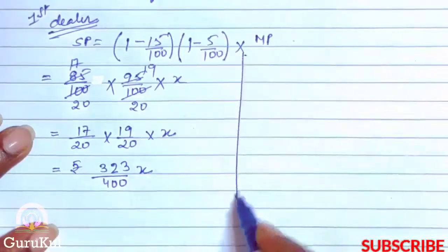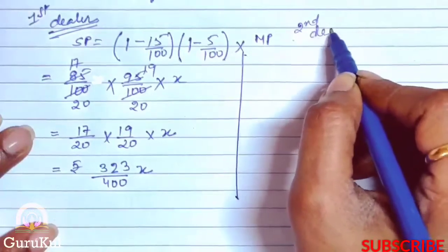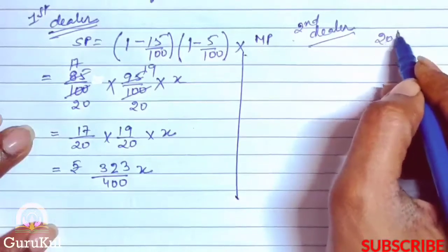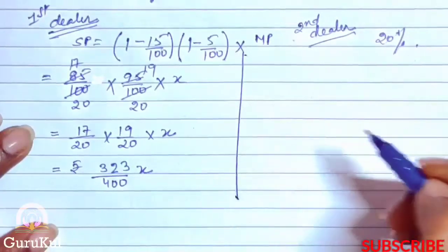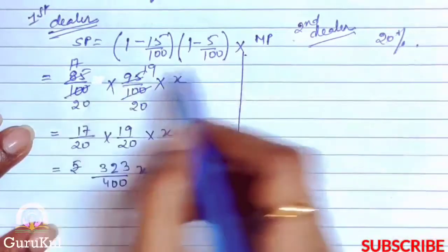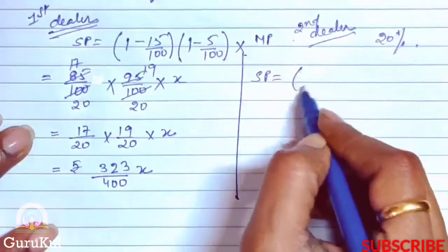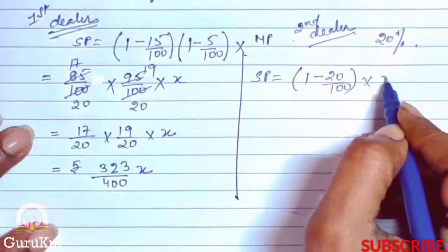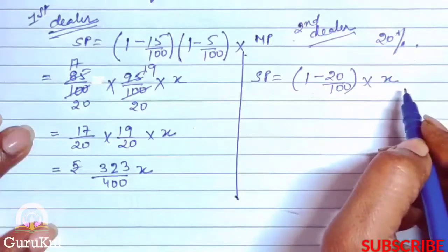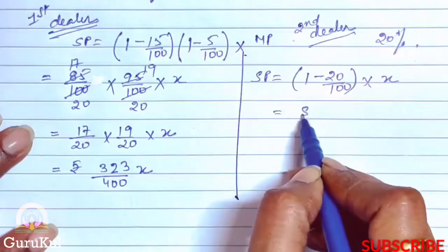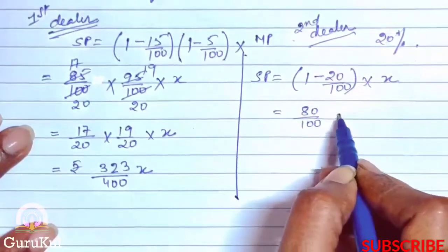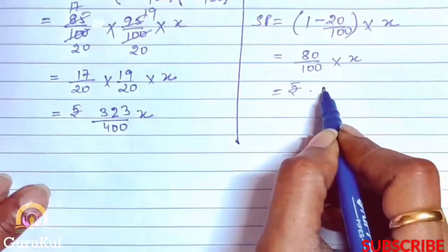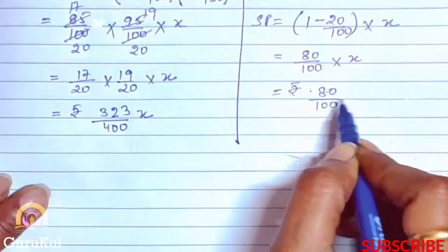Now moving on to the second dealer, who allows a single discount of 20%. Using the same SP formula: SP = (1 minus 20/100) into x, which is the marked price. This simplifies to 80/100 into x, which equals 80x/100. This is the SP of the second dealer.